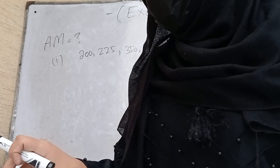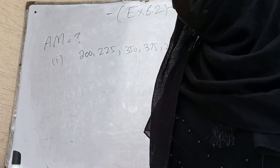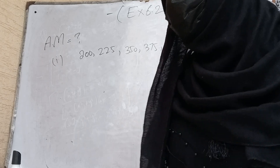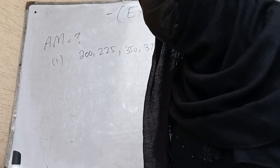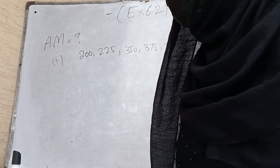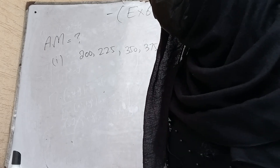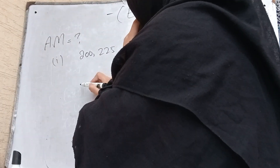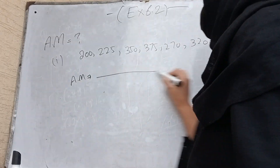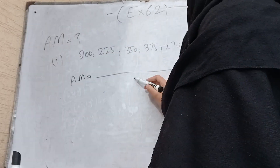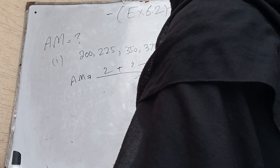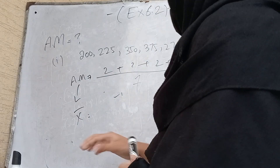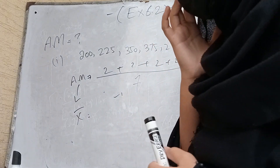First we define arithmetic mean. Arithmetic mean is a measure that determines a value of a variable under study by dividing the sum of all values of the variable by their number. That means arithmetic mean is the sum of all the numbers divided by the count of numbers. Arithmetic mean is represented by x-bar.